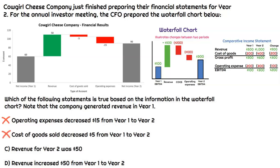The next option says revenue for year two was $50. When we look at our waterfall chart, it's green and it was up $50. Revenue, if it increases, has a positive impact on net income. So yes, revenue increased $50. But does that align with the statement? It could only if we had $0 of revenue in year one. The question tells us that revenue was not $0 in year one, so we know that's going to be incorrect. Revenue in year two would have to be something other than $50 to produce that $50 increase.